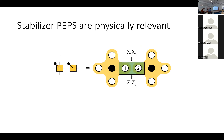Just as a brief aside: this is not an entirely theoretical exercise. These states can be created in a lab — each tensor is a five-qubit stabilizer state, and you can contract two tensors by performing a Bell measurement on the adjacent leg.